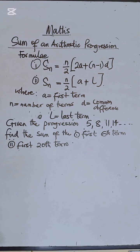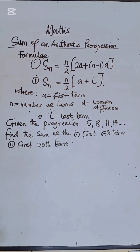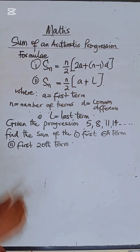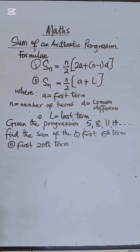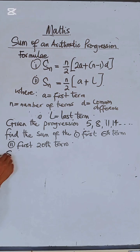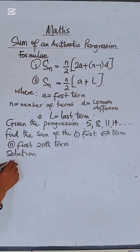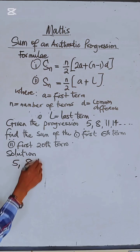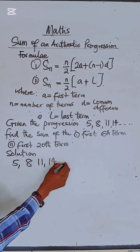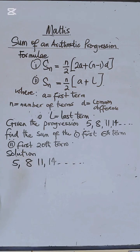We are given the progression 5, 8, 11, and 14, and so on. We have been asked to find the sum of the first 6 terms and the sum of the first 28 terms. Let's see how we can solve this. The first thing is to list out the progression: 5, 8, 11, and 14, and so on.